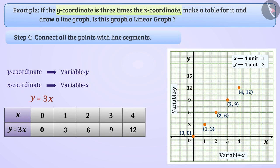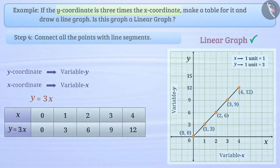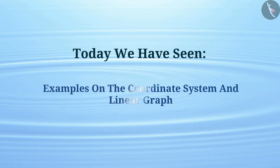Step 4: Now we will connect all the points with line segments. We see that all the line segments obtained are part of the same line. So we can say that this is a linear graph. Today, we have seen some more examples on the coordinate system and the linear graph.